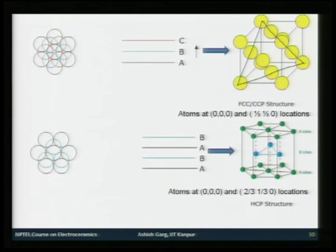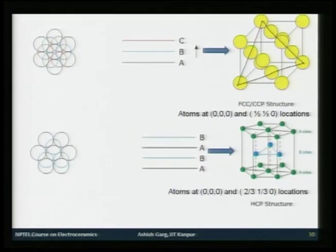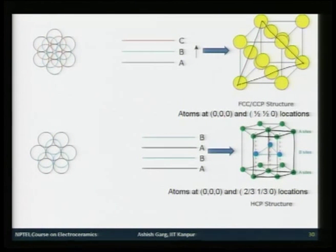In FCC, atoms are at 0,0,0 and all face-centered (½,½,0 type) locations. For hexagonal close-packed, the ABAB packing gives a basic unit cell with atoms at 0,0,0 as well as at ⅔,⅓,0 (or equivalently ⅓,⅔,0 depending on how you choose the lattice). The packing density for both HCP and FCC is about 74%.